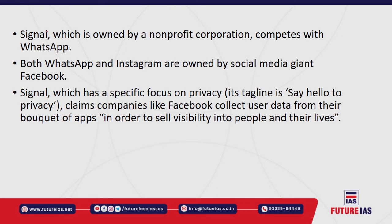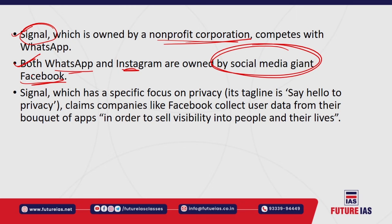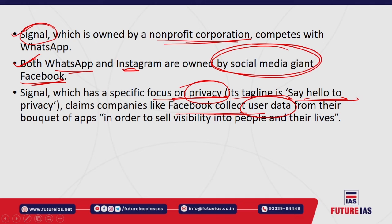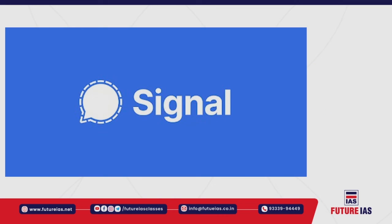Both WhatsApp and Instagram are owned by the social media giant Facebook. Signal, with its tagline 'say hello to privacy,' aims to prove that companies like Facebook collect data from their apps and sell it to third parties, affecting user privacy. Signal is owned by the Signal Technology Foundation and Signal Messenger LLC, a nonprofit corporation focused on privacy.